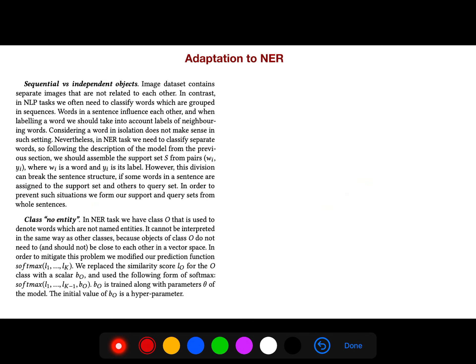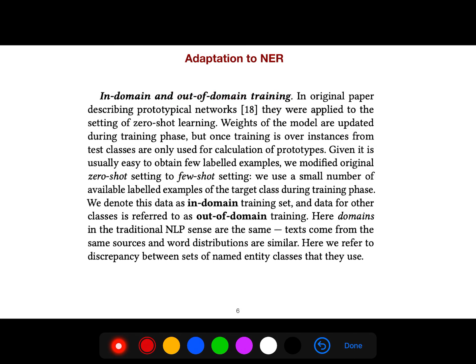Here they're talking about adaptation to NER and sequential versus independent objects. Image datasets contain separate images that are not related to each other. In contrast, in NLP tasks we often need to classify words which are grouped in sequences. Words in sequences influence each other, and when labeling a word, if you're using CRF (conditional random field), it's structured prediction so we have more information than just working on them individually.